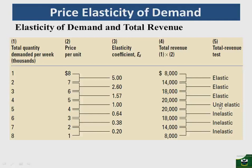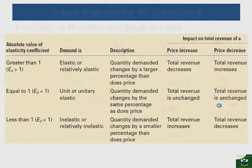To summarize: when demand is elastic, a decrease in price leads to an increase in total revenue. When demand is unit elastic, a decrease or increase in price does not affect total revenue. When demand is inelastic, a decrease in price leads to a decrease in total revenue. When demand is elastic, there is an inverse relationship between price and total revenue; when demand is inelastic, there is a direct relationship between price and total revenue.